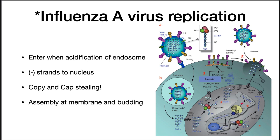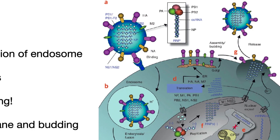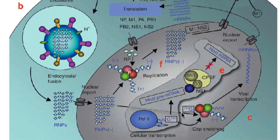Influenza A virus replication: the HA on the outer membrane of the virus binds to any one of the numerous sialic acid-containing proteins or lipids on the membrane of the cell. Many cells have these sialic acid receptors — you can find them in birds, in pigs, and in all sorts of other mammals, so there are flu viruses that infect all these different organisms. The virus is taken up by receptor-mediated endocytosis. A pH drop inside the endosome causes a conformational change in the HA protein, which then fuses with the endosome membrane, resulting in the release of the genome segments into the cell.